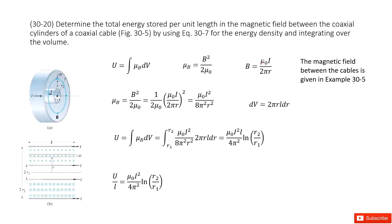So now you can get the magnetic field as μ₀I divided by 2πr. So input the B inside. Now you get the energy density. If we want to do the integral, you can see this μ_B is a function of r.